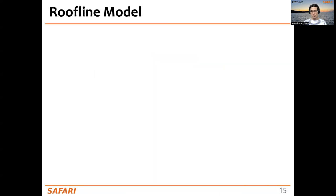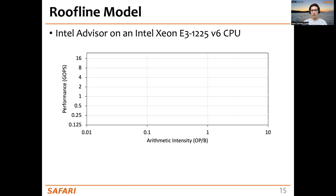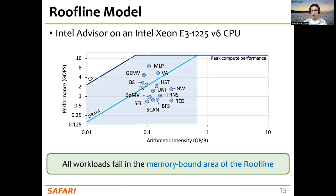We ran all 14 workloads on an Intel CPU and generated the roofline model for them. One key observation is that all 14 workloads fall in the memory-bound area of the roofline model. This is why we believe these workloads are potentially suitable for processing in memory, and what we will analyze is whether they are also suitable for the UPMEM PIM architecture.